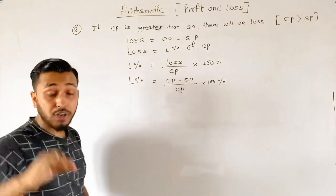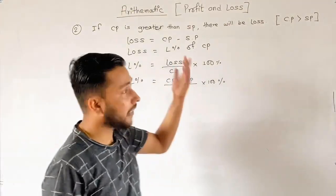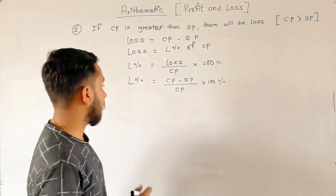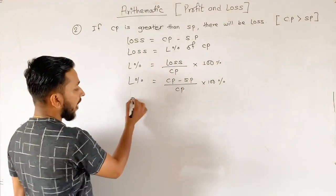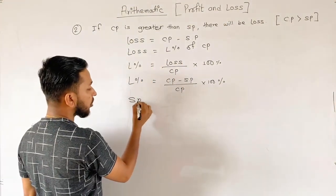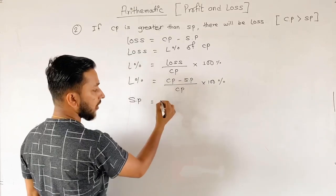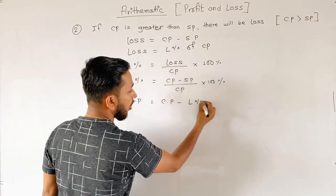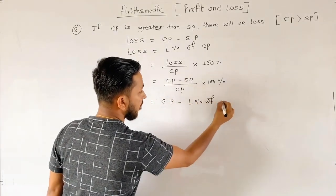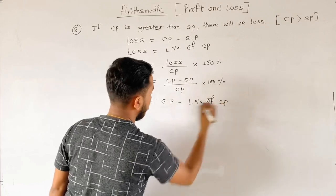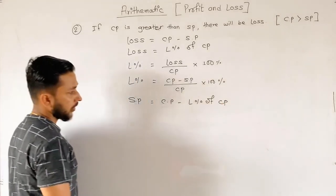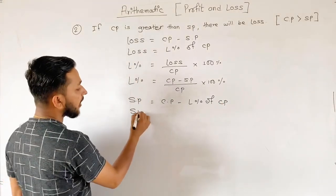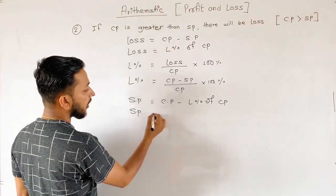In the loss condition, SP equals cost price minus loss percentage of cost price. So here is your formula.